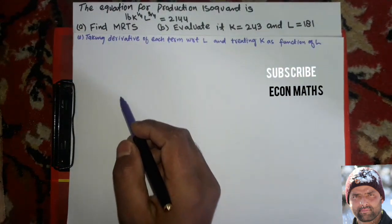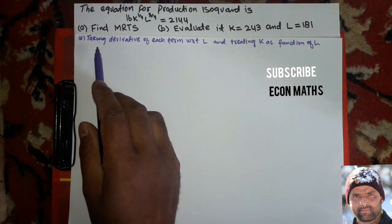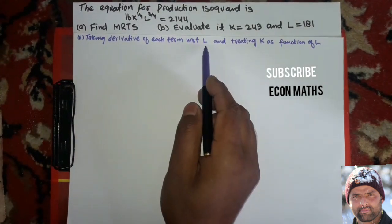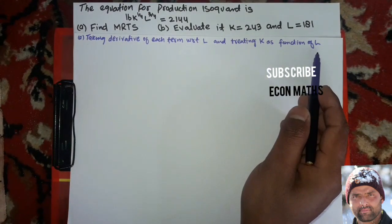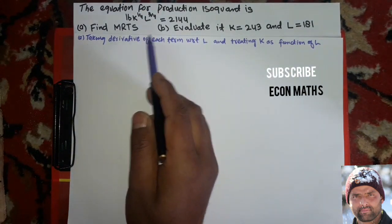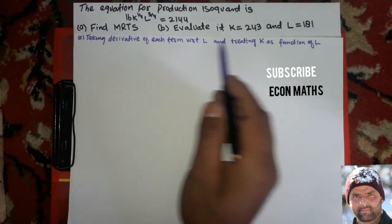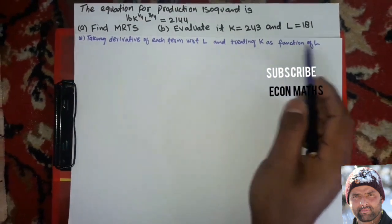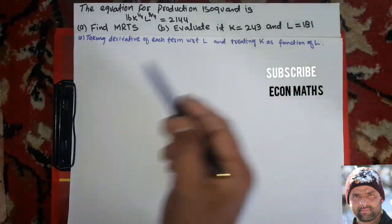So what will we do? We will first take the derivative of each term with respect to L and treat k as the function of L, because this is an implicit function, not an explicit function. We have to make sure that k is treated as a function of L.